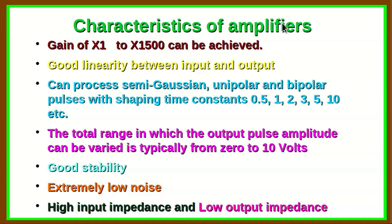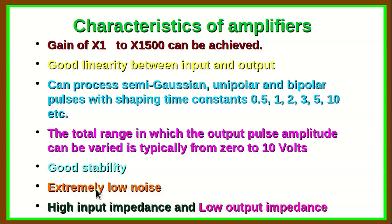Important amplifier characteristics: the gain should be variable from unity to about 1500, controlled via a coarse control and a fine control. There should be good linearity between input and output, with the ability to process semi-Gaussian unipolar and bipolar pulses with shaping time constants varying from 0.5 microseconds to 10 microseconds. The output pulse amplitude range is typically 0 to 10 volts, though sometimes 0–5 V or 0–2 V. Good overall stability of the amplifier gain and low noise are essential, with high input impedance and low output impedance.